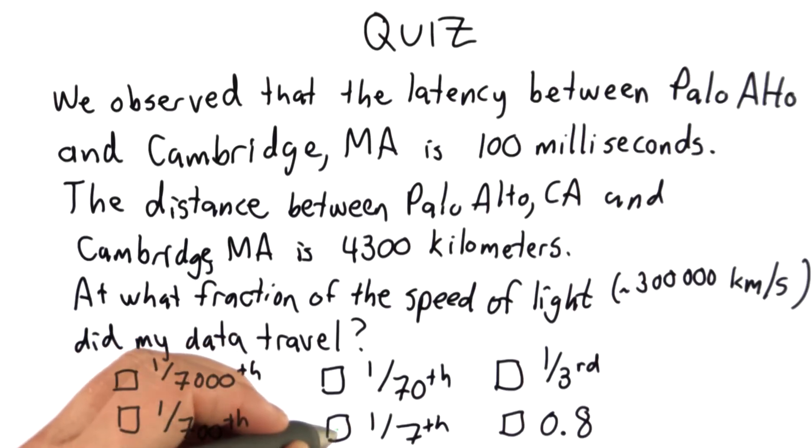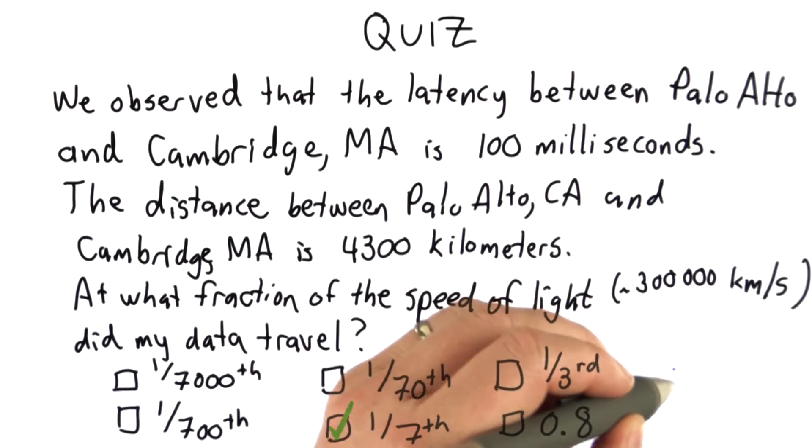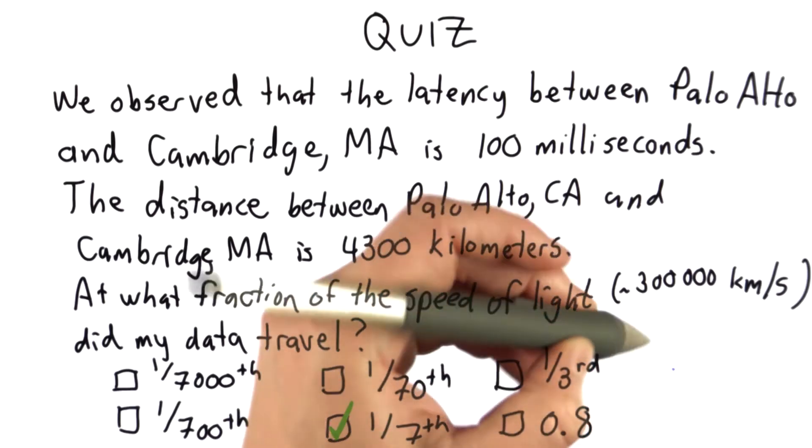So the answer is 1/7th, which is pretty good. There aren't many things that we deal with where we can think of them in terms of fractions of the speed of light and fractions above 10%. So our data was traveling between California and Massachusetts at a speed of about 43,000 kilometers per second.